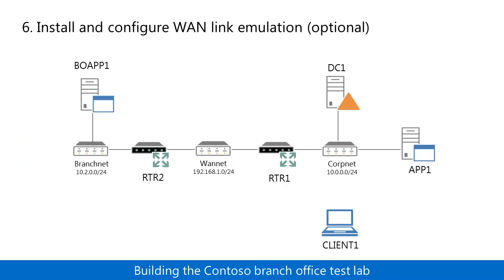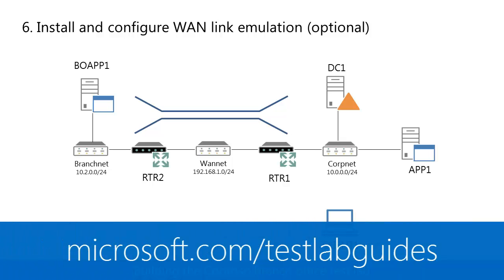In the final and optional step, you install and configure WAN link emulation hardware or software on either the RTR1 and RTR2 computers, or on the WANnet subnet, to simulate a low bandwidth, high latency or high loss point-to-point link between the corp.net and Branchnet subnets. For more information, visit Microsoft.com/TestLabGuides.